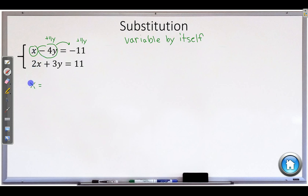it's by itself. The 4y is positive, so we'll have 4y. And the 11 is negative minus 11. So we have a variable by itself.